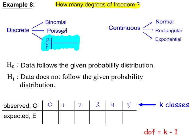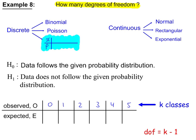Example 8: we're working with a discrete probability table, as seen in unit S2. So H0 states the data follows the given probability distribution. There are no population parameters to test — no lambda, no P, no mean, no variance. These are always k minus 1 degrees of freedom. With 6 classes, that gives 5 degrees of freedom.